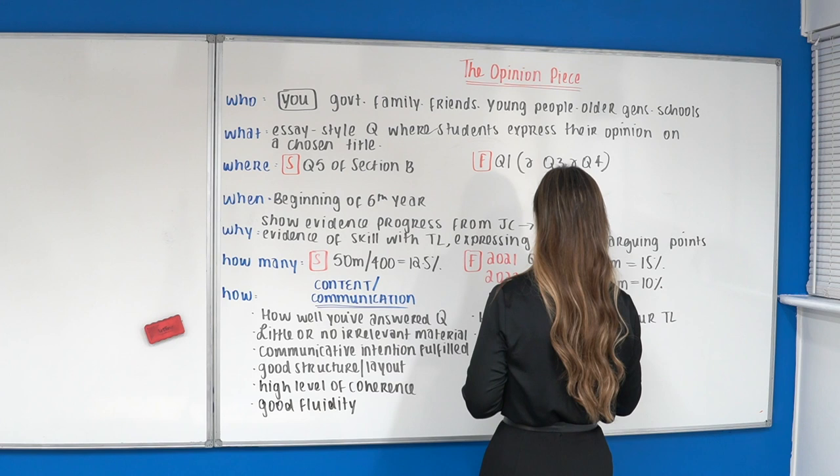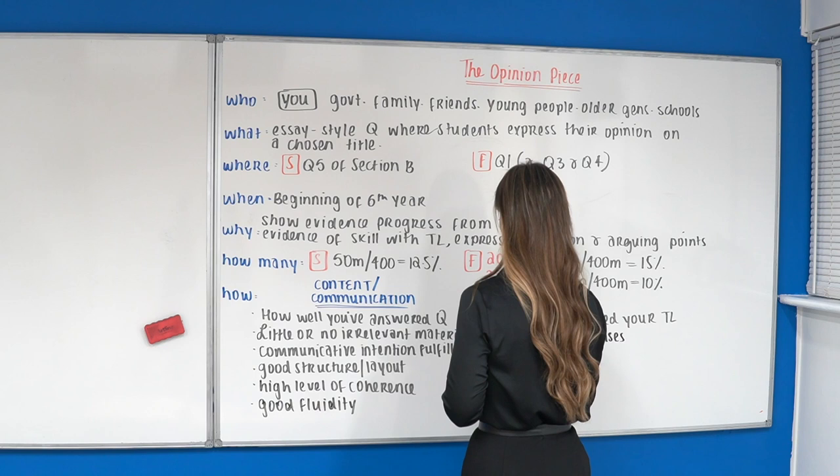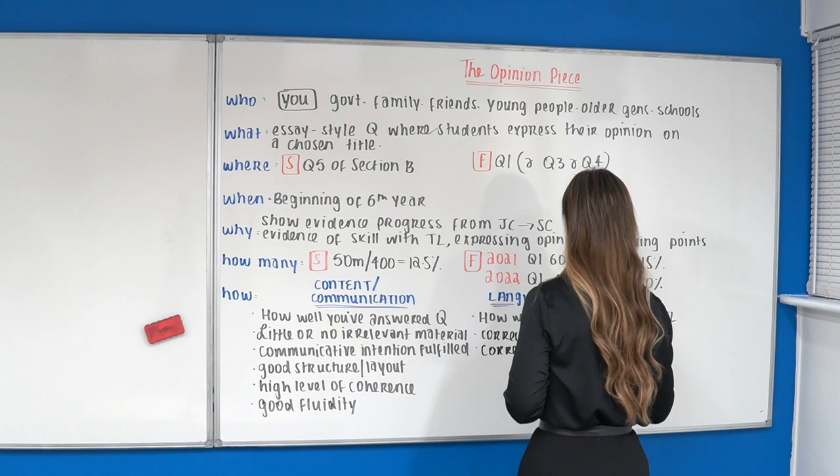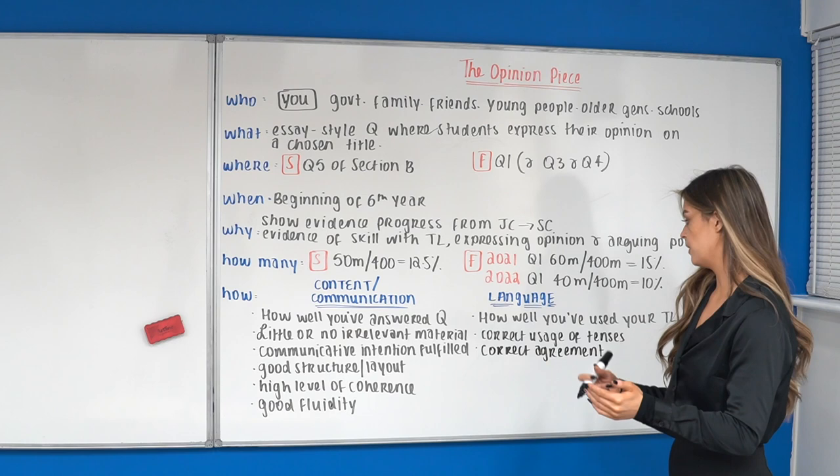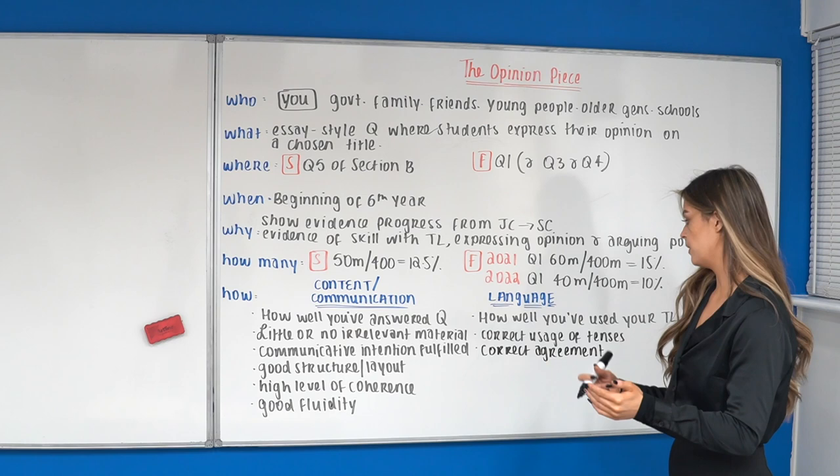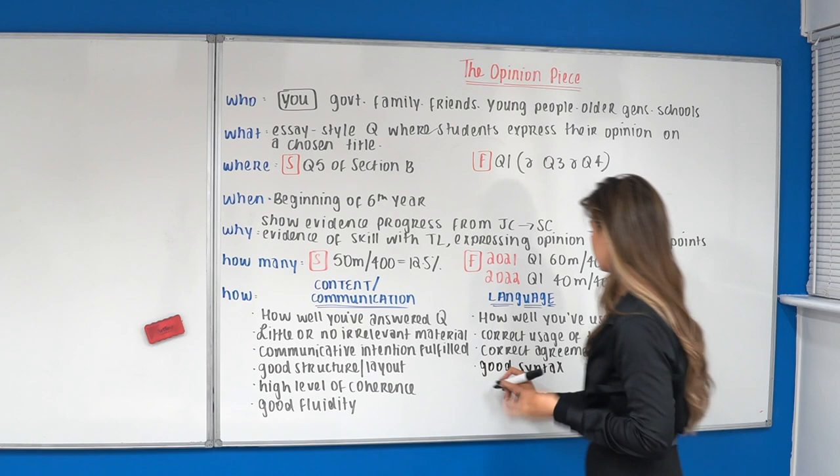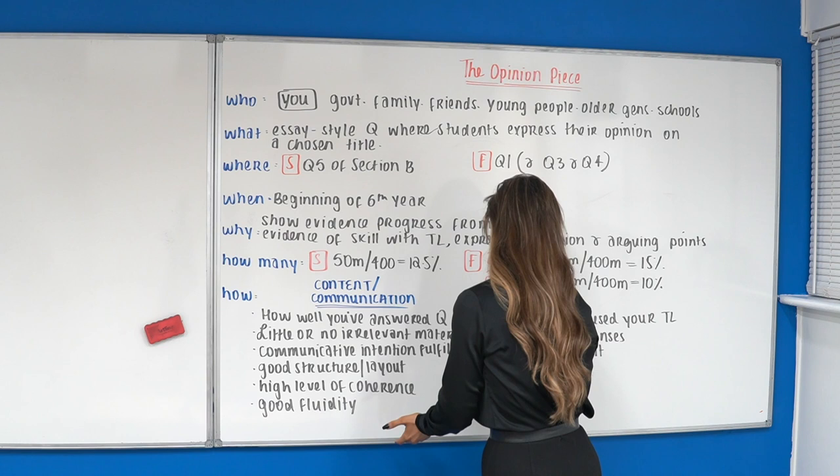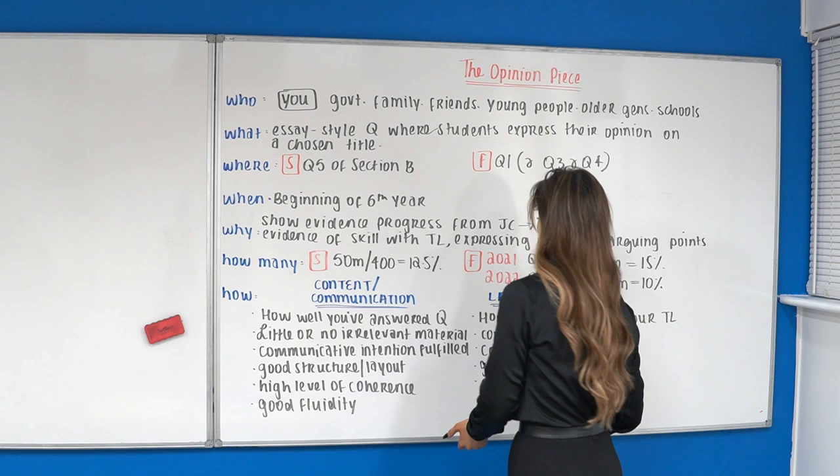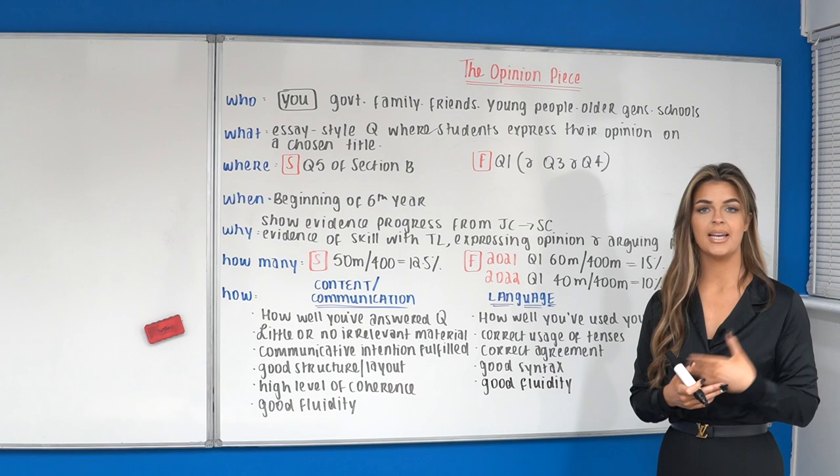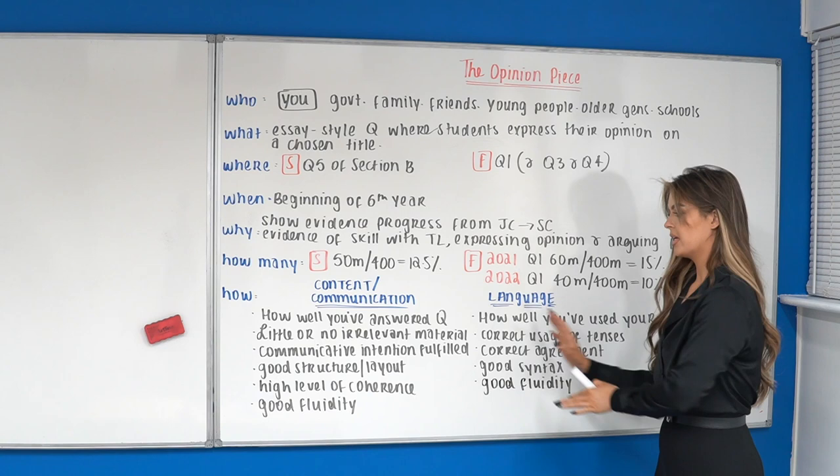Then your language is going to be things like correct usage of tenses. That doesn't mean you have to use every single tense you've ever learned. It just means that the tenses you do learn, you've used correctly. We would have correct agreement so that you know the gender of the nouns that you're using. And if you're using an adjective or an article with those nouns that they're going to match. So masculine with masculine, feminine with feminine, singular with singular, plural with plural. And we would have then good syntax, like easily understood sentence structure basically is what we're saying there. And then this whole idea of good fluidity will kind of come into your language as well in the sense that you're not just jumping from one point to the next or using very blocky phrases. Your answer has some sort of elasticity to it as well.